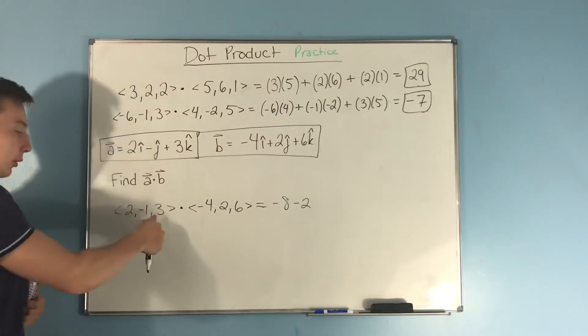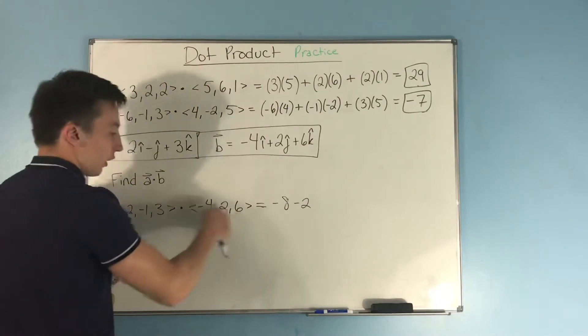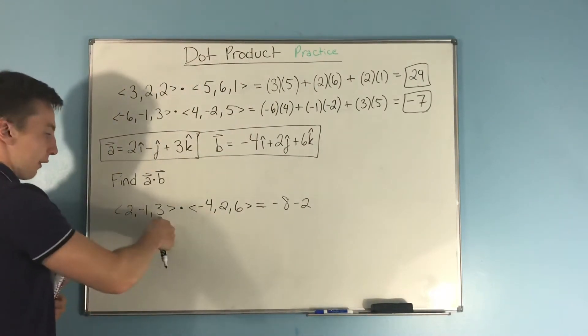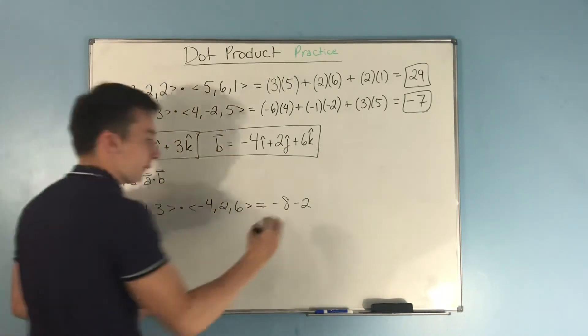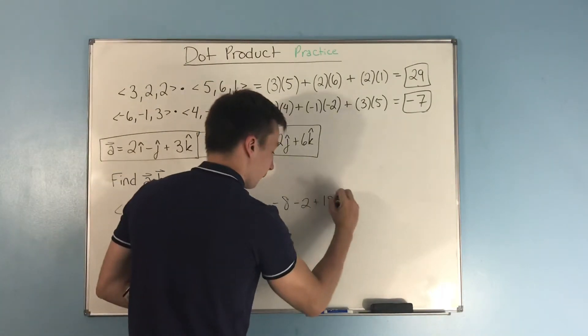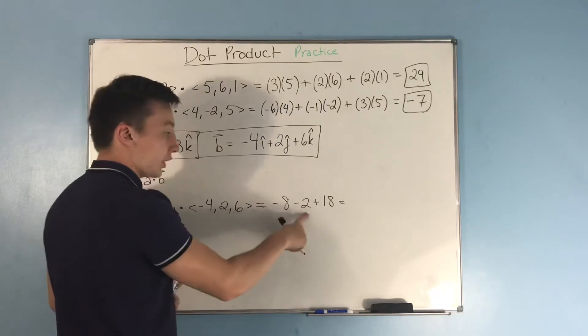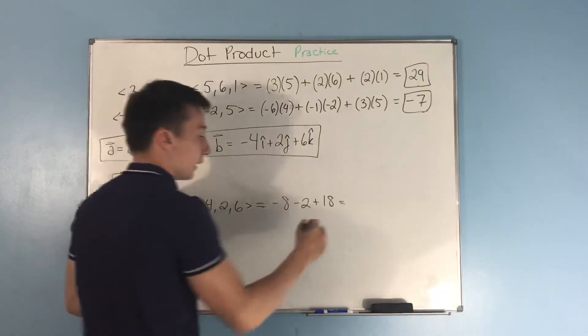And lastly, we're going to multiply our third set of components, and then add it on. So, we have 3 times 6. That's 18. So, we'll have a plus 18 here. So, we have negative 8 minus 2 is negative 10. Plus 18 is 8.